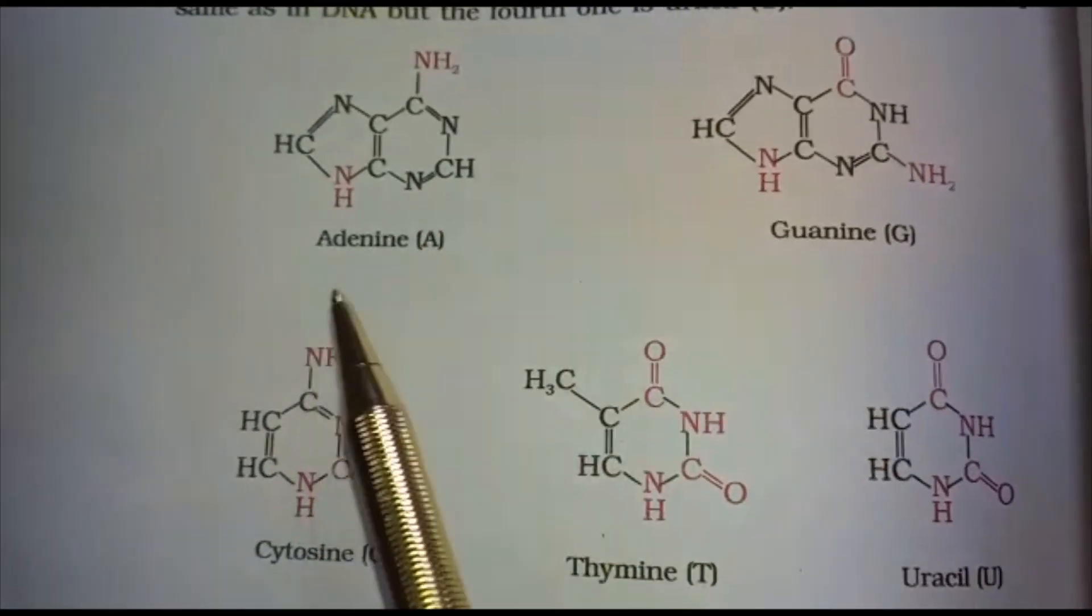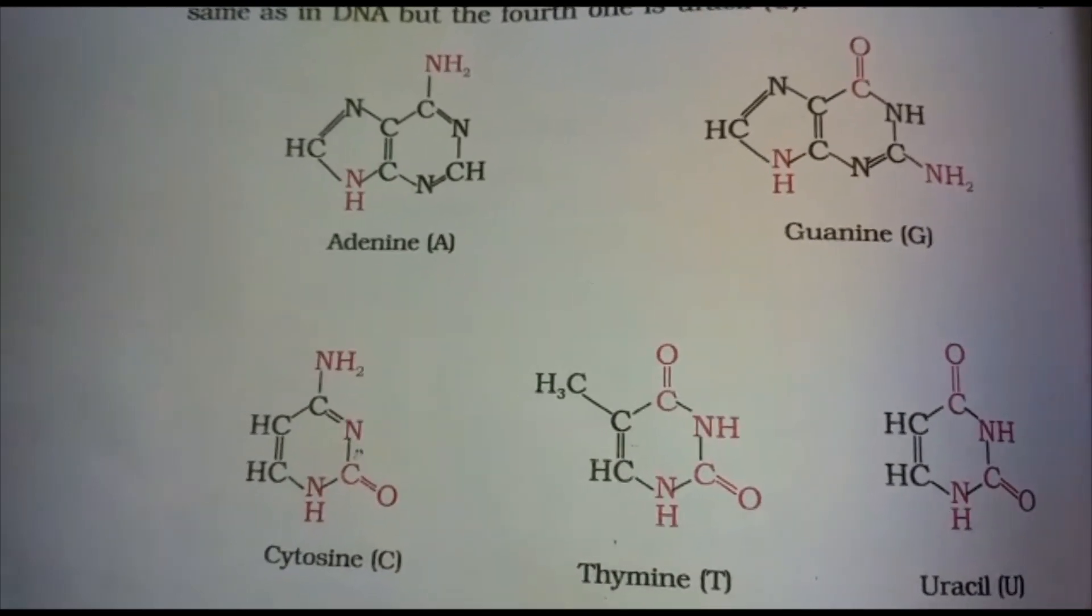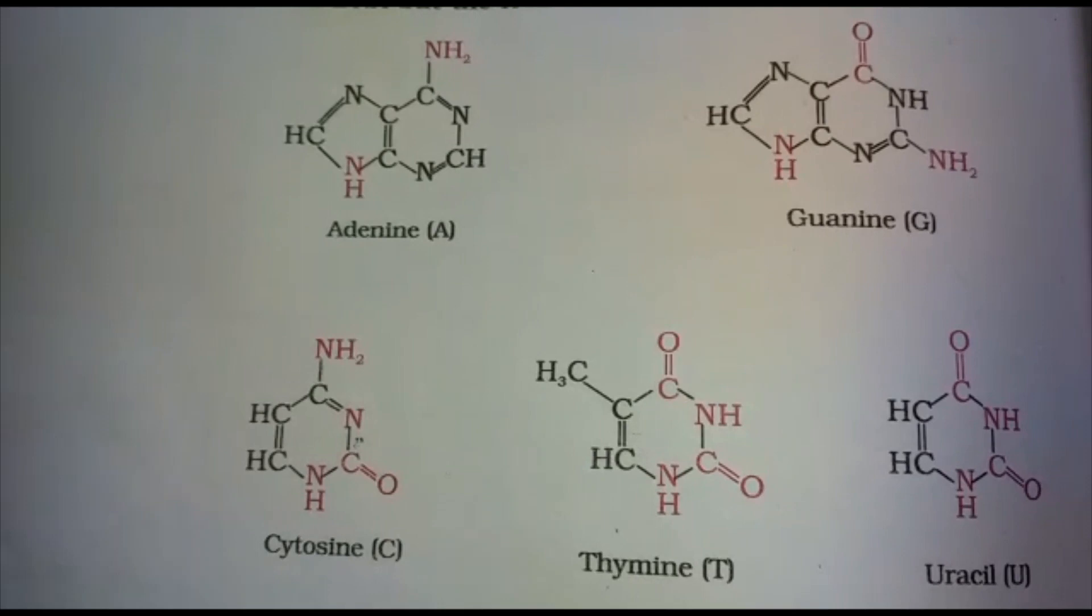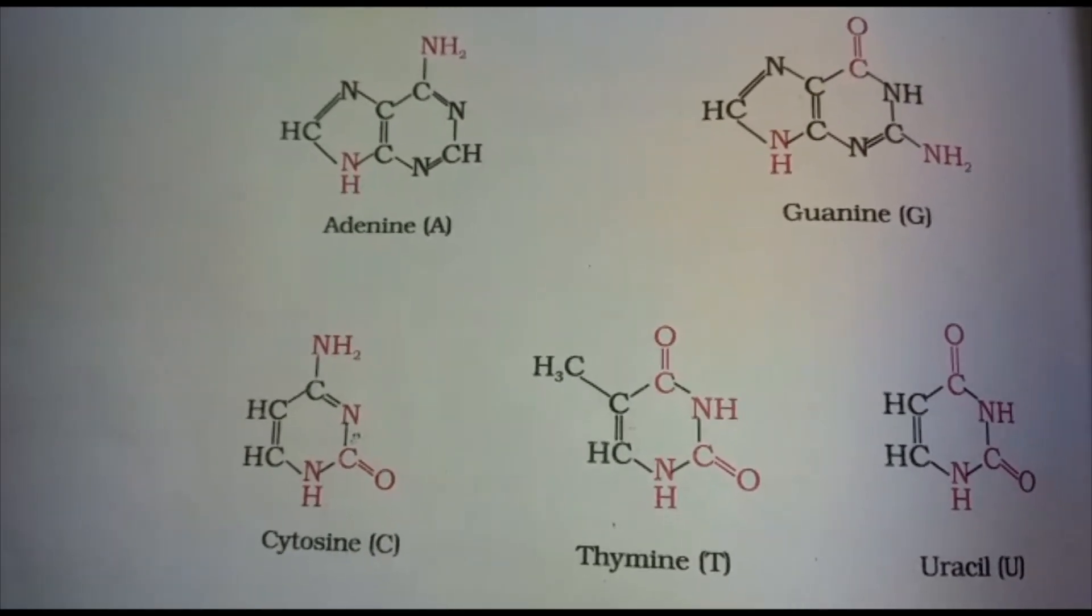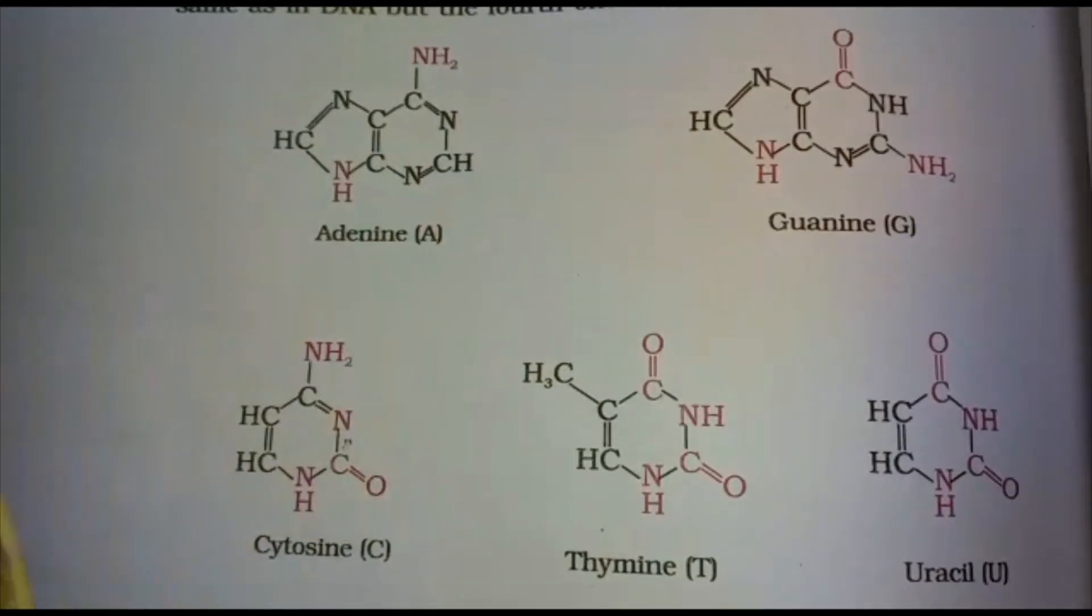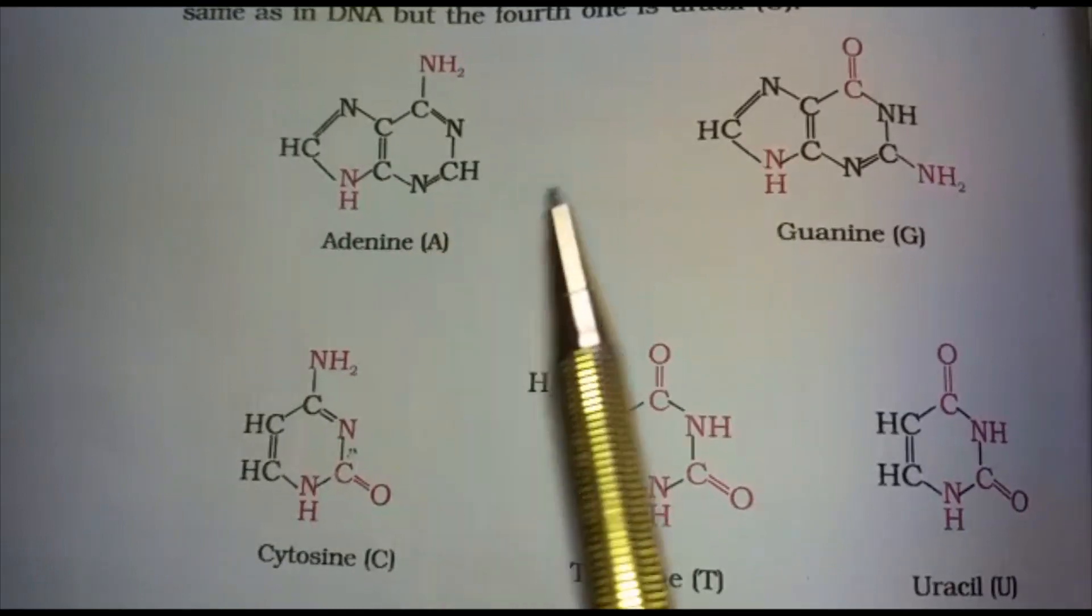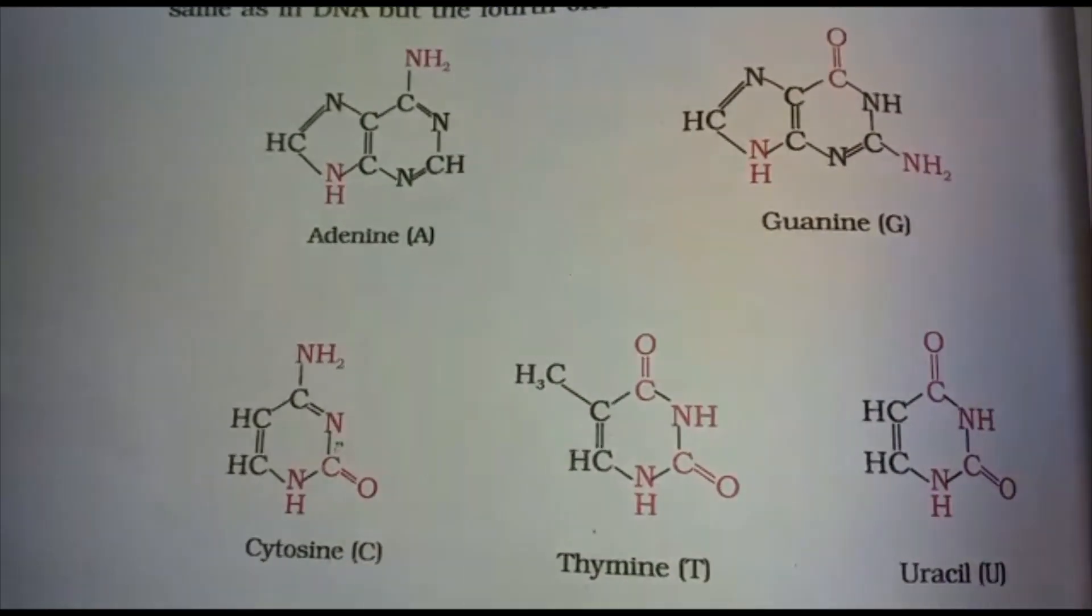These are the bases of DNA and RNA. Both DNA and RNA contain four bases. Three bases of DNA and RNA are found to be the same; only one base is different. In the case of DNA, the four bases are adenine, guanine, cytosine, and thymine, whereas in the case of RNA the bases are adenine, guanine, cytosine, and uracil.